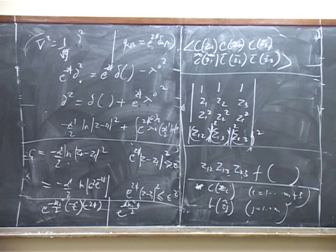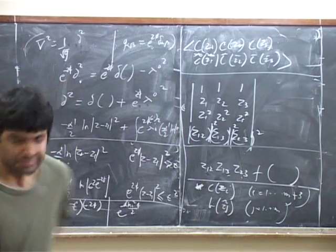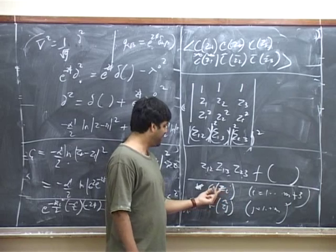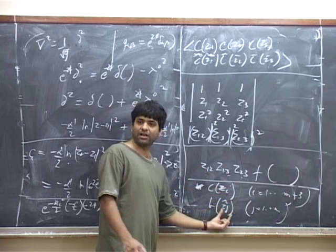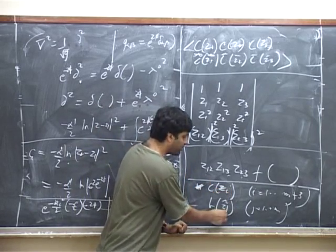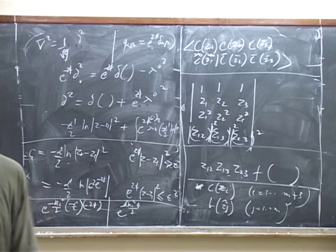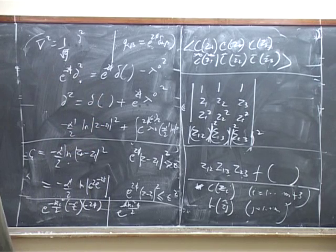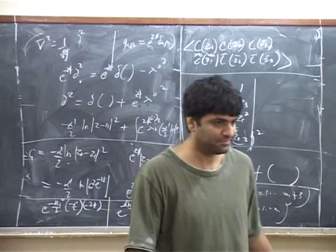So what we can do is write a function that has all the right singularities and zeros, and then multiply it by some analytic function, and see how that analytic function is constrained. The function that has all the right zeros is something that has a product of zij for every C and a product of z tilde ij for every B. A function that has all the right poles is the product that has zi minus z tilde j in the denominator for every pair of i and j. So now let's see how this function grows at infinity. We're going to write that down times an analytic function.